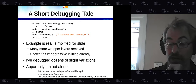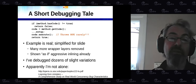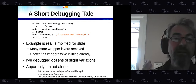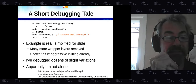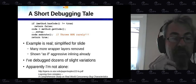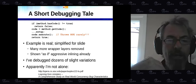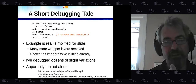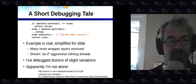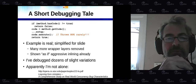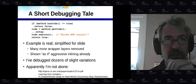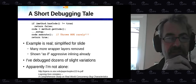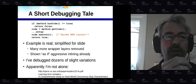I want to start with an example — a short debugging tale. The example is real, and I've simplified it a lot already. I've debugged this example in dozens of variations. It's one of the most common forms of data race. And of course, if you look at the code, it doesn't really look like a data race or a bug of any kind.